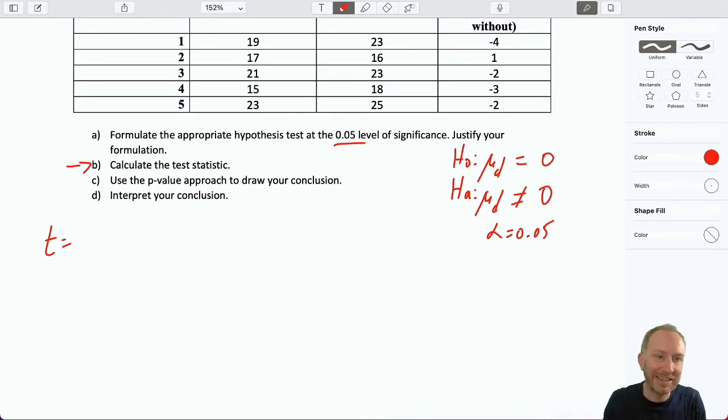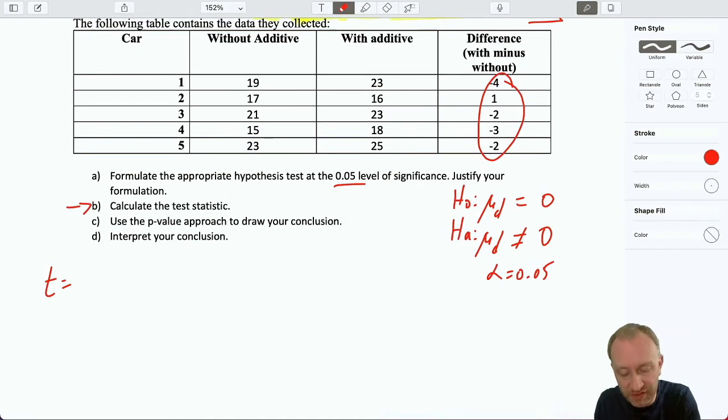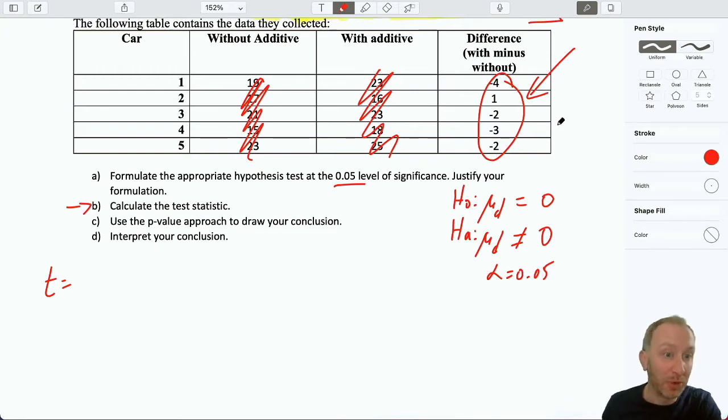Where basically, you know, it looks very much like just a simple Module 9 type single population test. And this is that sample, right? Because once we have calculated those difference values, we don't need this stuff anymore. All of our testing is done on those values.